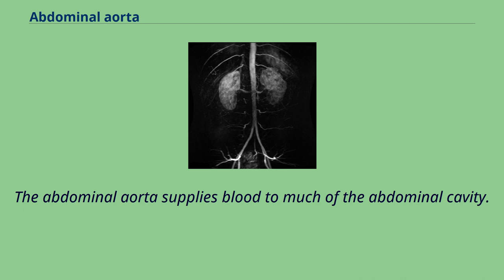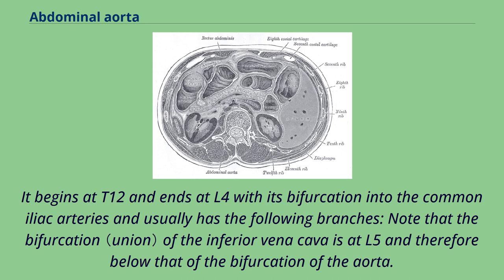The abdominal aorta supplies blood to much of the abdominal cavity. It begins at T12 and ends at L4 with its bifurcation into the common iliac arteries, and usually has the following branches. Note that the bifurcation of the inferior vena cava is at L5, and therefore below that of the bifurcation of the aorta.